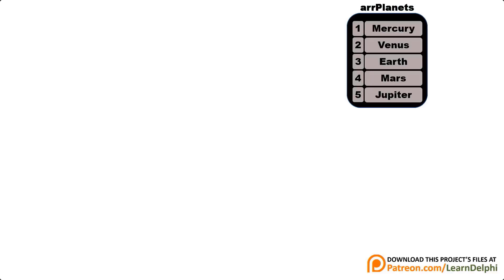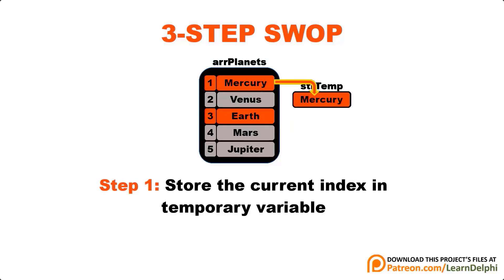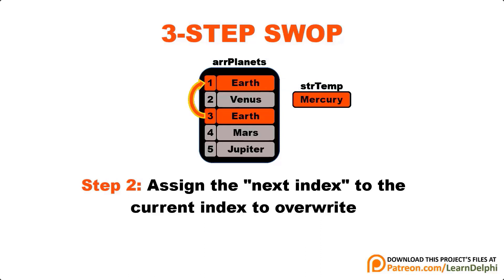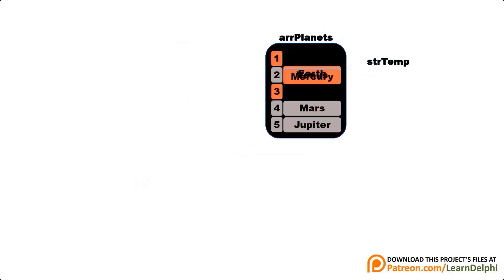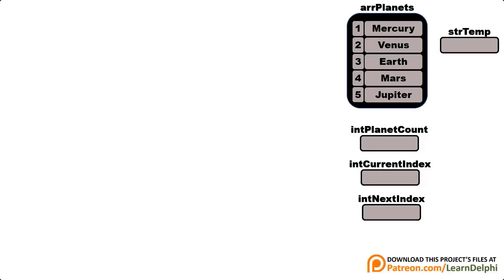While cycling through the array, the algorithm must keep track of a few values. You must have a temporary variable to help you swap two elements. In this example, you must get Earth into position 1 where Mercury is currently. If you attempt to swap the two values directly, you will overwrite the first value and Mercury will be lost. The temporary variable prevents this: first assign Mercury to the temp variable — it is buffered and can be remembered later. Now you can overwrite Mercury with Earth. Mercury is not lost because you still have it in temp. Then write it back to the position where Earth was, completing the swap.